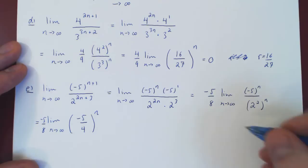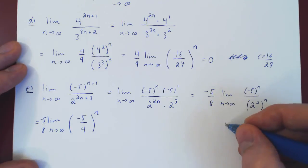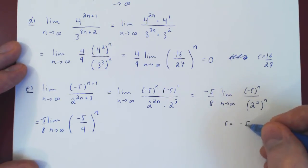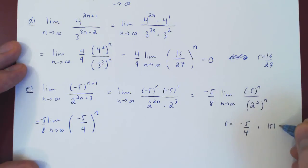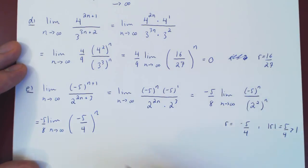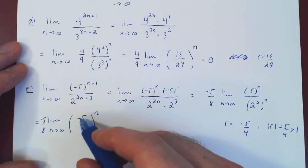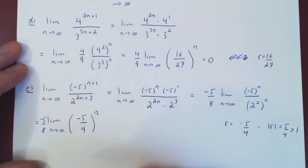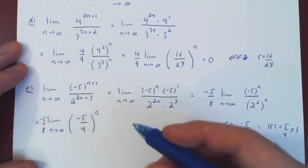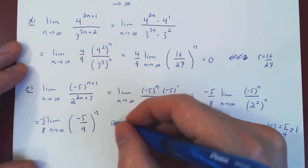So r is negative 5 over 4. In absolute value, r is 5 quarters, which is strictly larger than 1. So this limit does not exist. And again, it's not just positive infinity — because we have negative 1 to the n, this will oscillate. So the best we can say is that the limit simply does not exist.